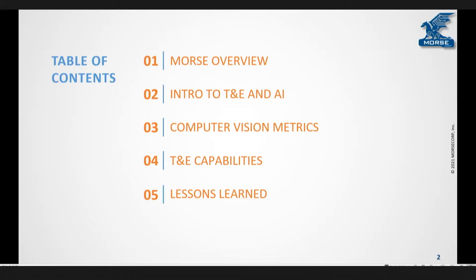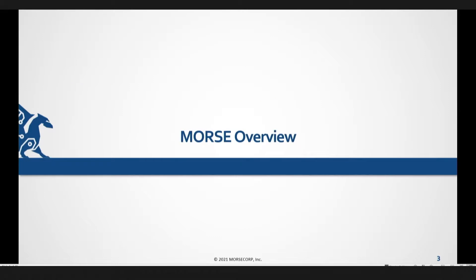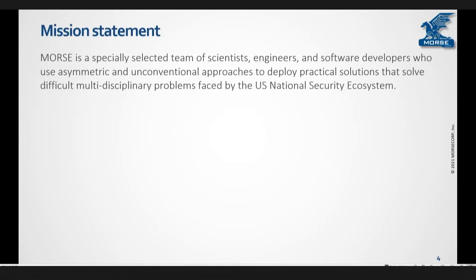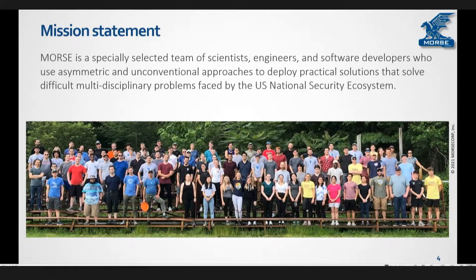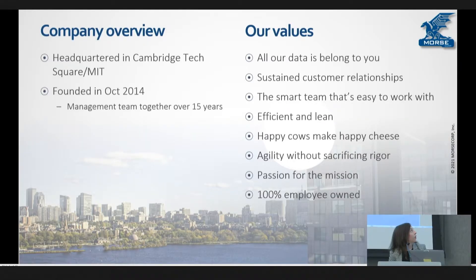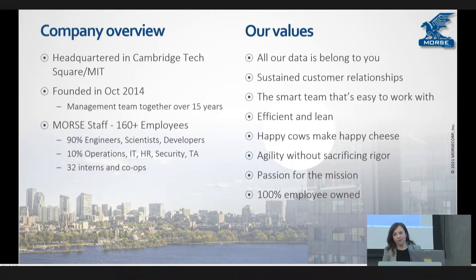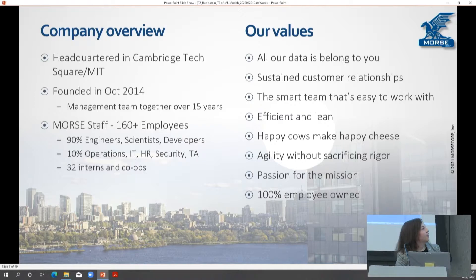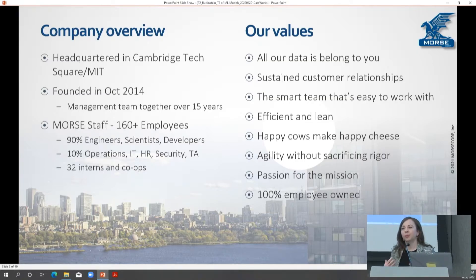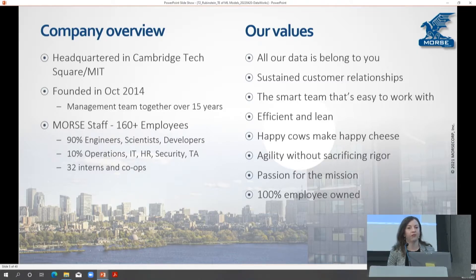The bulk of the talk is going to be about computer vision metrics and why it's so complicated to pick the right ones for your use case. Then I want to talk about T&E capabilities — once you choose those metrics, how do you actually field, implement, and measure them effectively? MORSE is a small company of scientists, engineers, and software developers who work on problems for the national security ecosystem. I'll use MORSE as an example throughout this presentation not for the purposes of pitching MORSE specifically, but because there are a lot of frameworks and lessons learned that are going to resonate with anyone who really cares about delivering T&E as a service.